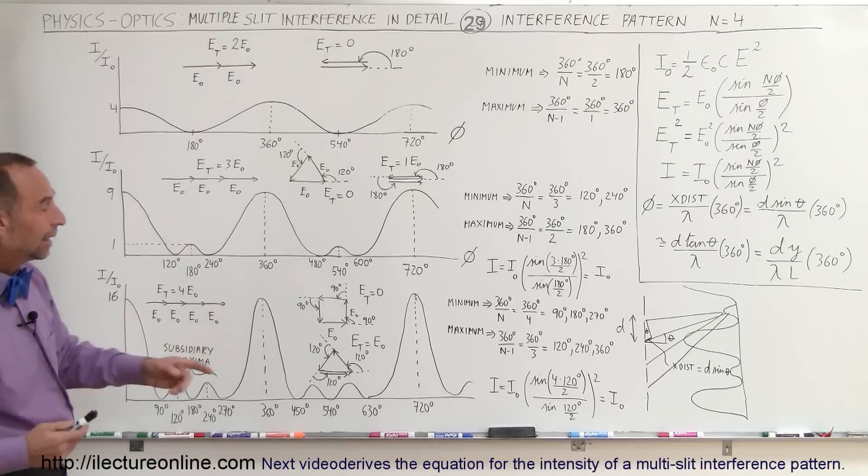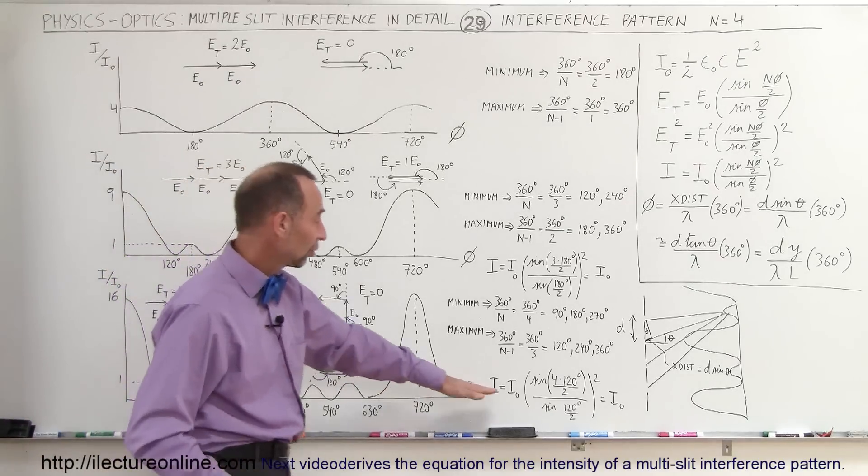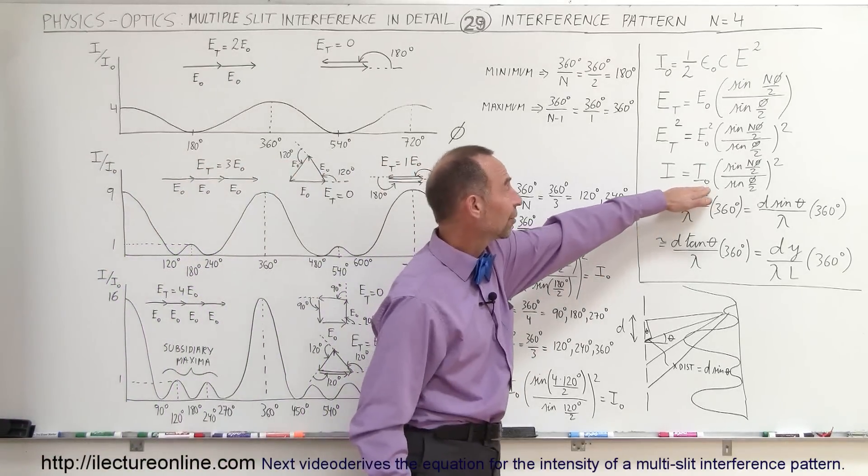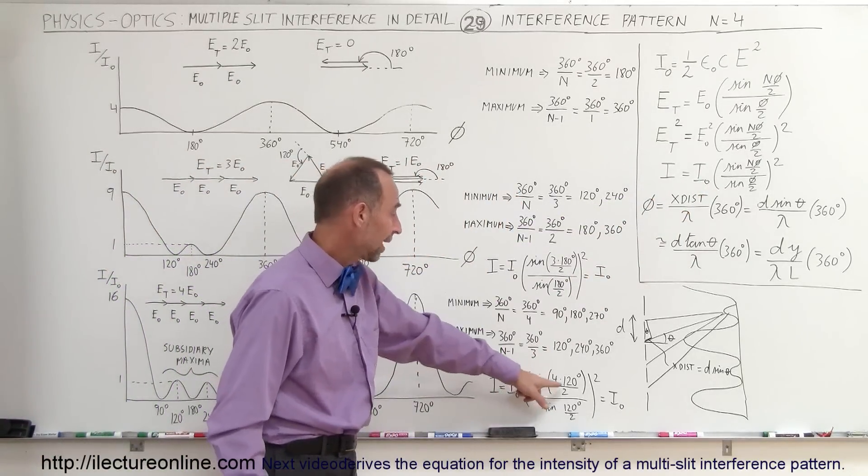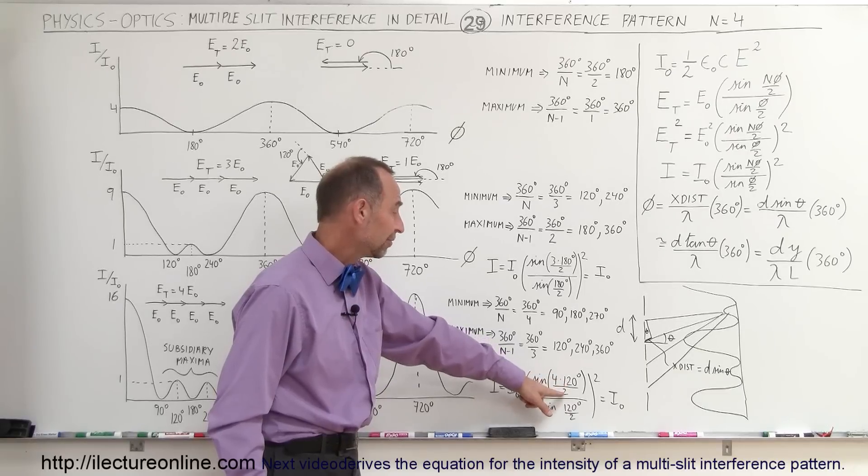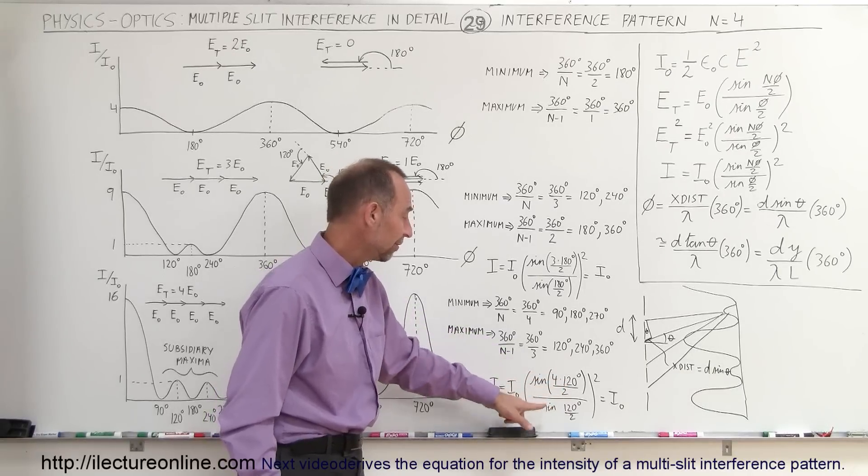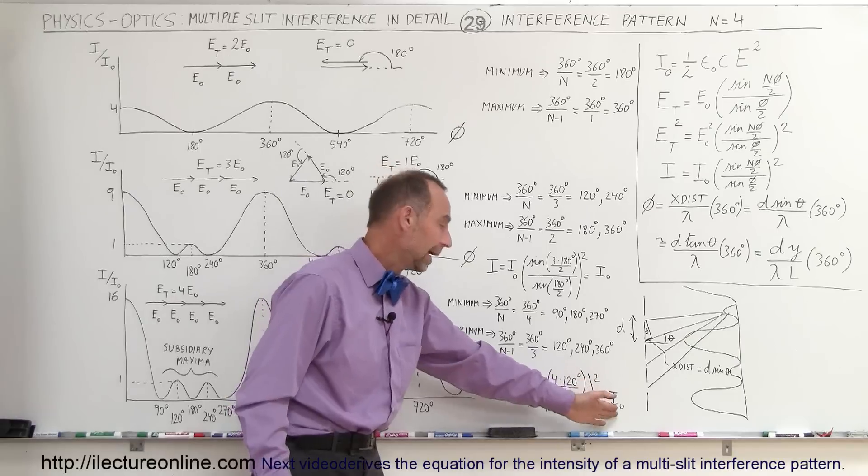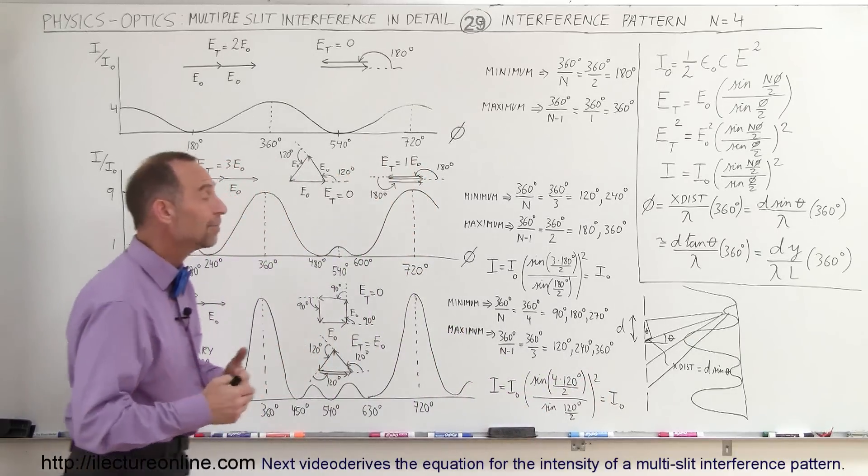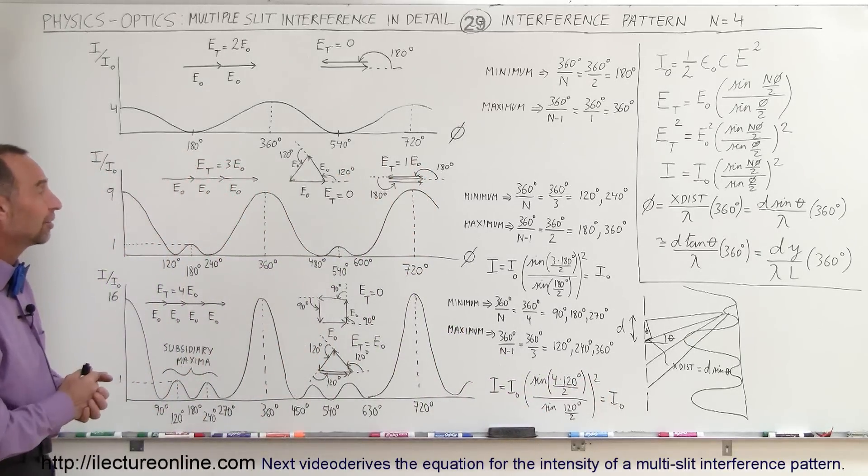Now, let's see here. Again, if we want to find the intensity using this equation right there, which is the equation that came from right there, again, 4 times 120 degrees, 480 divided by 2, that's the sine of 240, divided by the sine of 60, take that quantity squared, and you end up with 1 times the intensity of a single phasor.